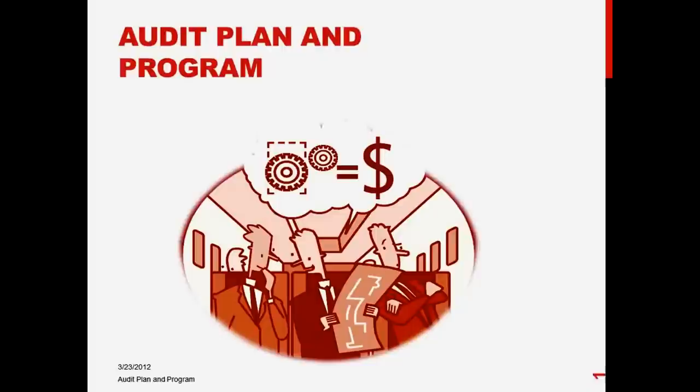Think about going through the Pinnacle case. In part two, you looked at how different scenarios would impact inherent risk or acceptable audit risk. In part four, you used those same scenarios and thought about whether it was a fraud risk indicator, and if so, what element of the fraud triangle is impacted. Now we start to move into the actual audit testing.